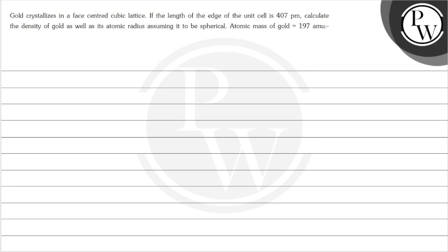Hello, let's see the question. The question says: Gold crystallizes in a face-centered cubic lattice. If the length of the edge of the unit cell is 407 picometer, calculate the density of gold as well as its atomic radius, assuming it to be spherical. And it is given that atomic mass of gold is 197 amu.